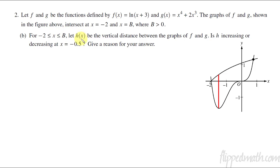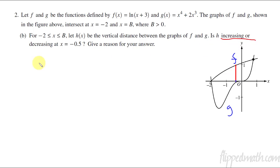All right, let's go on to part B. For this problem, they tell us that H of X is going to be the vertical distance between F and G. That one's F, that one's G, so it's just the vertical distance. I drew a little red line to represent it, and as you move across, that line is going to get smaller or larger. The question is: as you're moving right at x equals negative 0.5, is H increasing or decreasing? When you see the words increasing or decreasing, that should jump out at you — you're trying to figure out if the derivative is positive or negative.